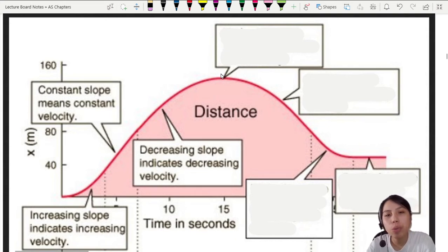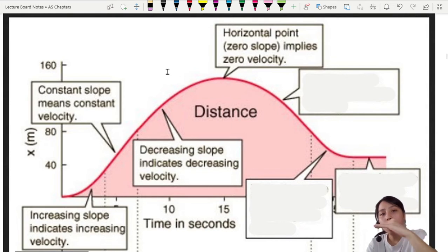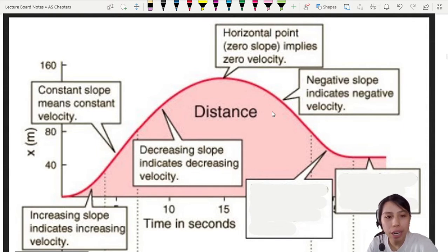And the last part, at the highest point, when you have a horizontal point, no slope, no velocity. As you keep going, the gradient changes sign. So that means velocity has changed sign. Now negative velocity, because negative slope, you see going down, negative slope.